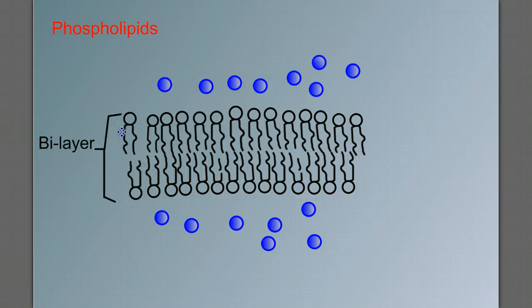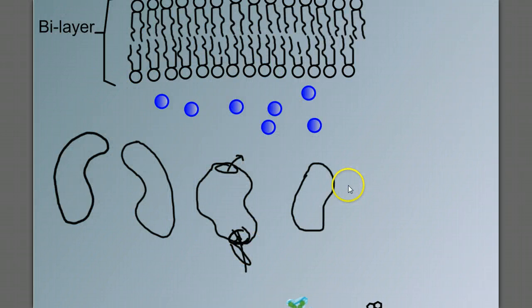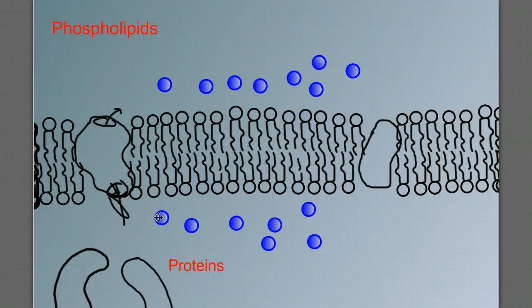While phospholipids are the primary component of the cell membrane, they're not the only components. We also have a variety of different proteins that are embedded throughout the membrane and serve different functions.